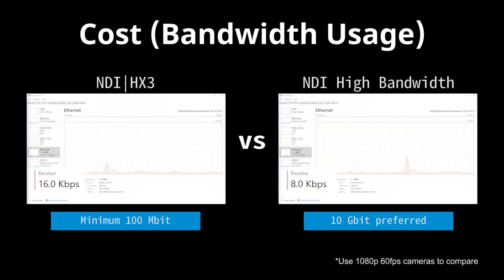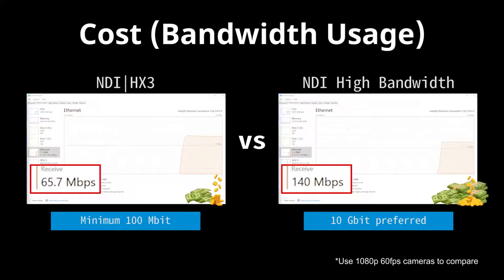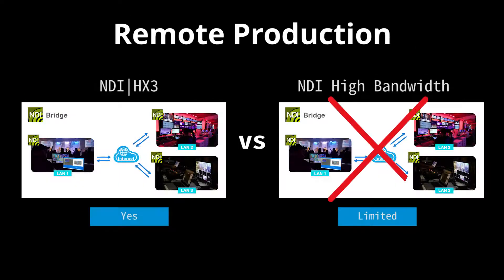NDI high-bandwidth requires an expensive network infrastructure. As a result, the startup costs can be much higher than HX3. The high data rates of NDI high-bandwidth make it unsuitable for remote production.